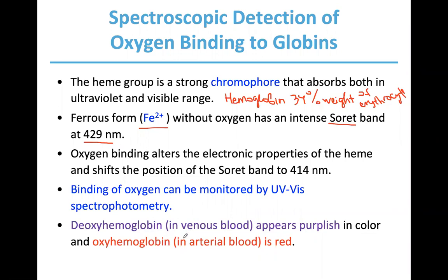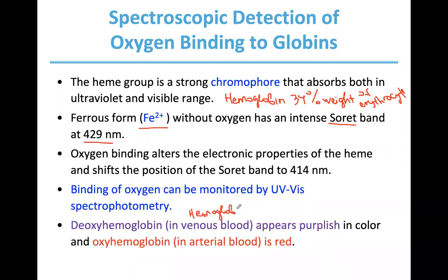Deoxyhemoglobin — hemoglobin in erythrocytes in venous blood, the blood going toward the heart — is only 64% saturated with oxygen.